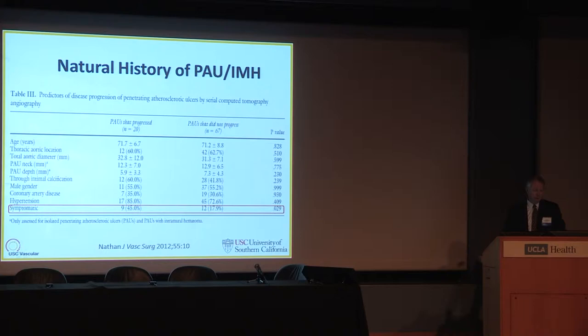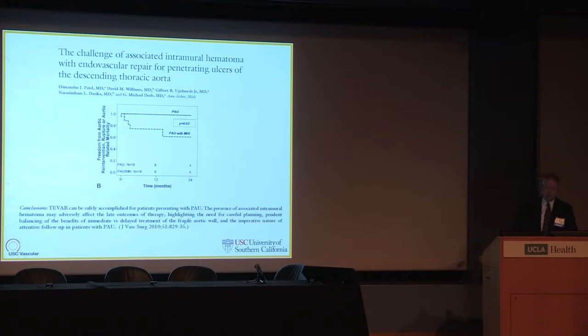Symptomatic patients do progress and they are the ones most likely to rupture and present in extremis. All other types of predictors looked at in this series did not provide any significant differentiation with regards to the decision to perform a repair. Intramural hematoma is really the bad actor in this pathology, and if associated with a penetrating aortic ulcer, we really need to be paying attention.